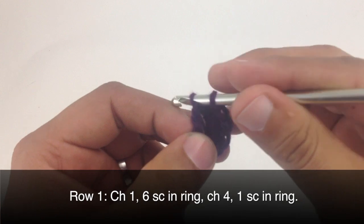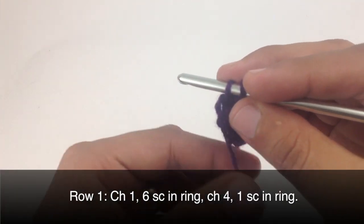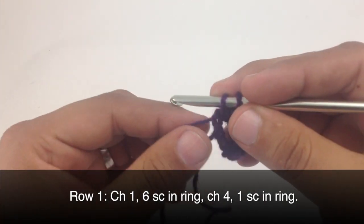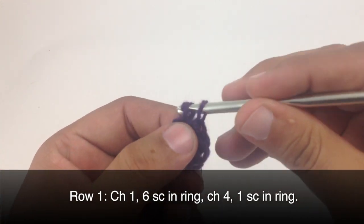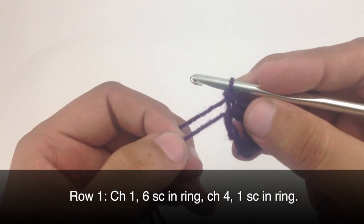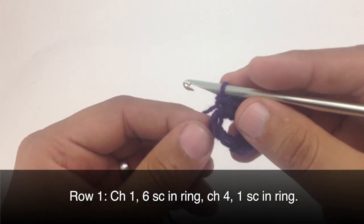And you'll notice here I'm actually working our tail into the single crochets as we're going. That way I don't have to weave it in later. I can just cut the tail when I'm finished and it will be nice and secure inside.